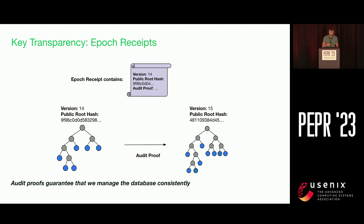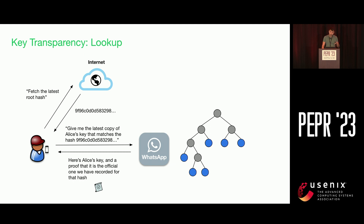These epoch receipts are published so that anyone can verify that we're managing these keys honestly. Importantly, these receipts don't contain any sensitive information or PII like phone numbers or even the public keys themselves. For handling lookup requests using key transparency, Bob first reaches out to this public Internet endpoint to get the latest published epoch and the root hash associated with it. Then Bob asks WhatsApp to provide the latest copy of Alice's key that matches this root hash. WhatsApp servers can then use the internal Merkle tree to not only return the appropriate key for Alice, but also an inclusion proof that Bob can verify, asserting to him that Alice's key is actually included in the Merkle tree whose hash matches what he asked for.